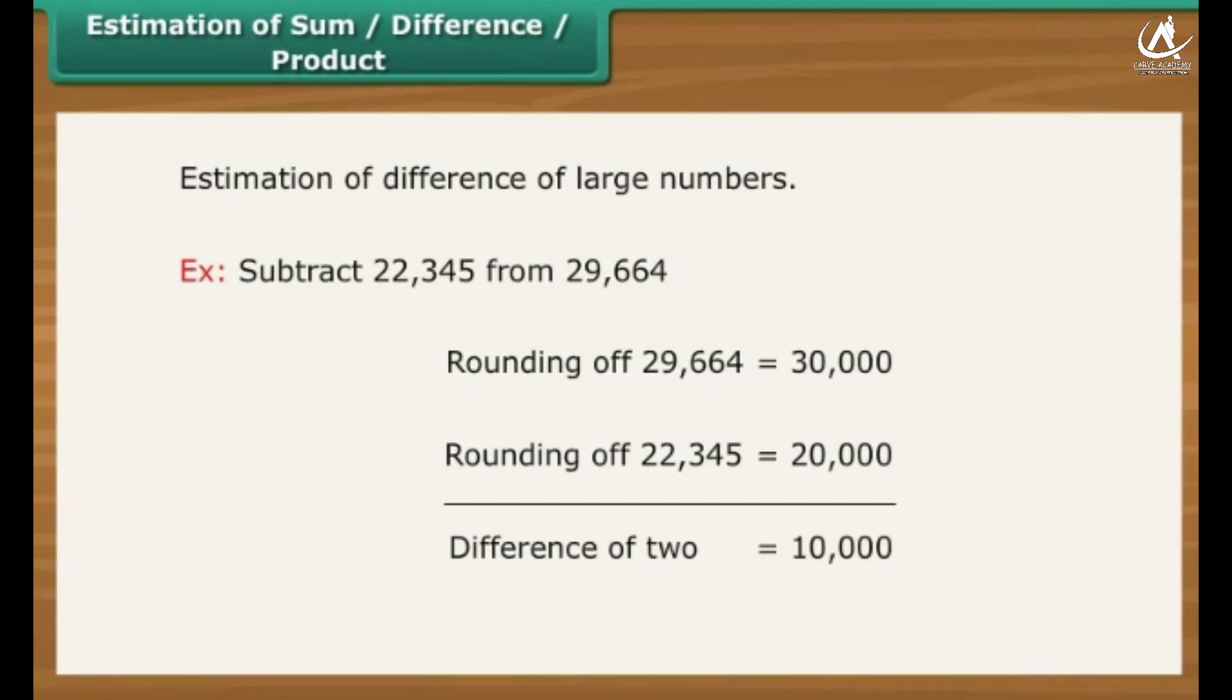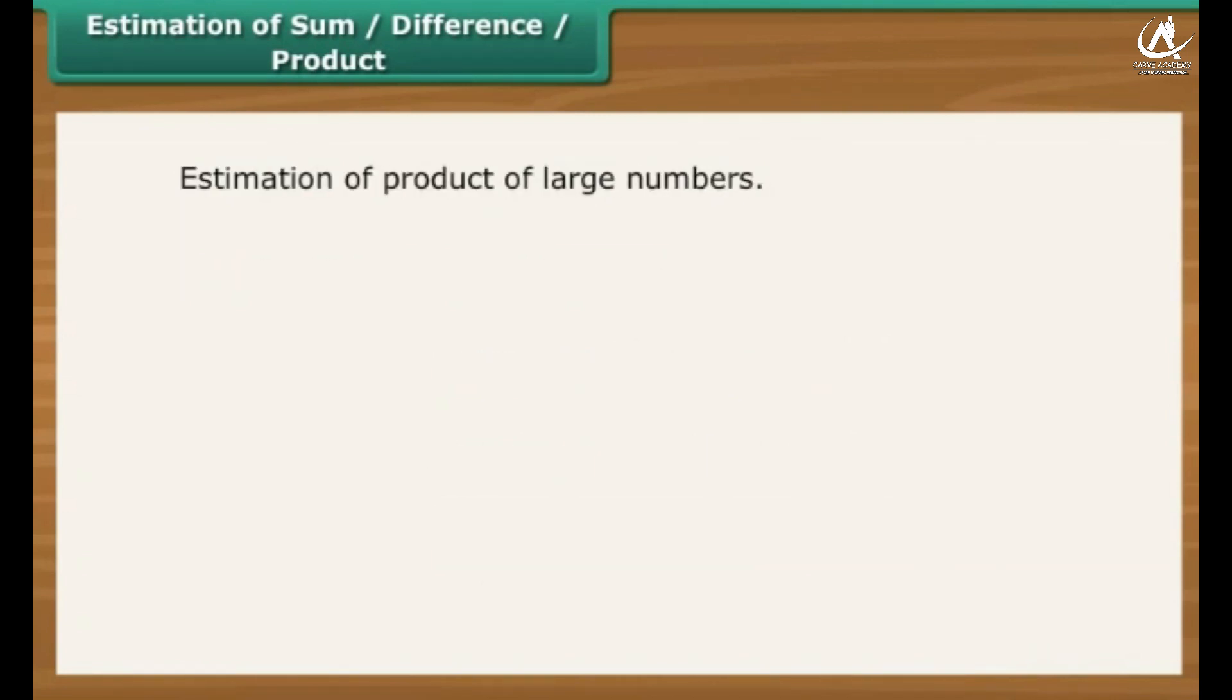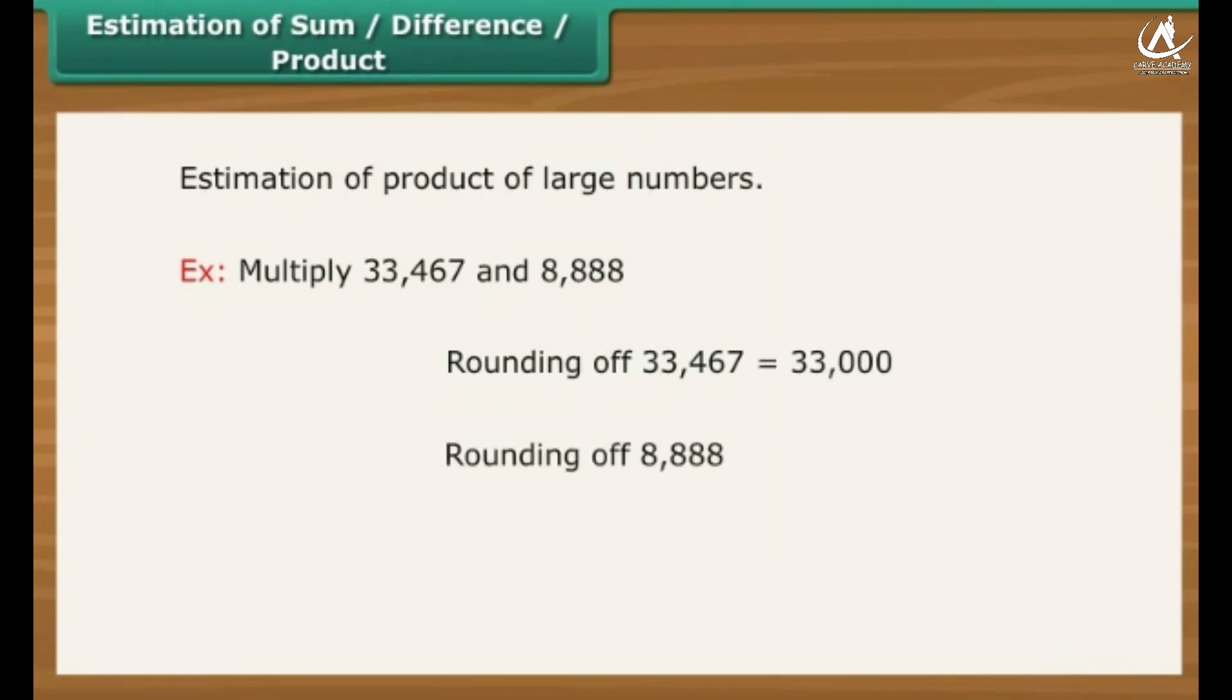Estimation to nearest number can help in the estimation of the product of two large numbers. For example, multiply 33,467 and 8,888. Rounding off 33,467 is equal to 33,000. Rounding off 8,888 is equal to 9,000. Product is equal to 33 into 9, followed by six zeros, which is 29,70,000.